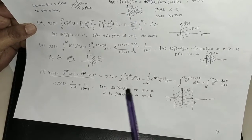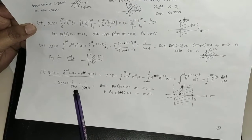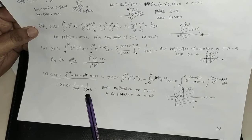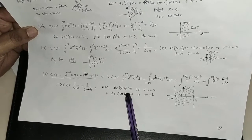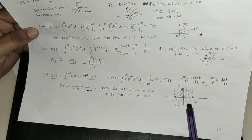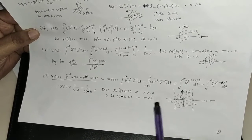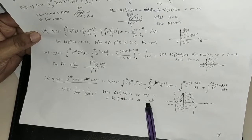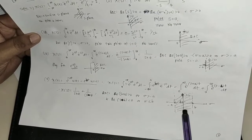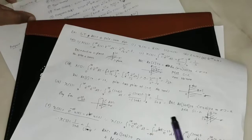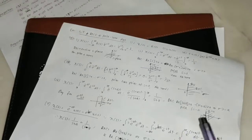The inverse signal is 1, and X of A is equal to 1 by s plus A, and 1 by s minus A, where ROC is sigma greater than A, and the other ROC is sigma less than B. This is the strip in the s-plane.